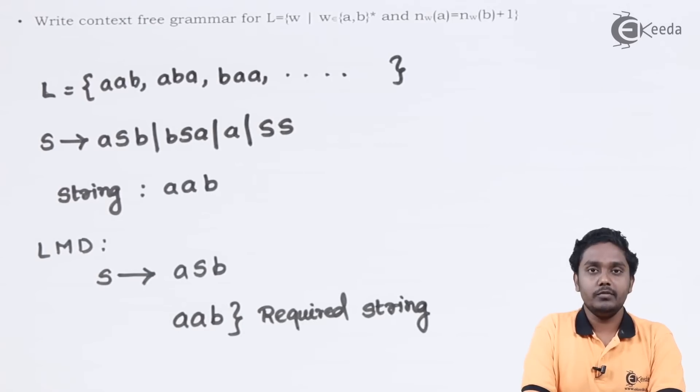In this particular derivation, we have only one non-terminal S in the derivation, and hence we can say that the leftmost derivation and rightmost derivation are similar.